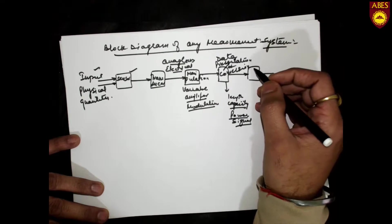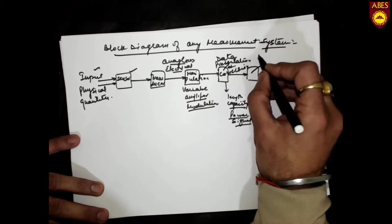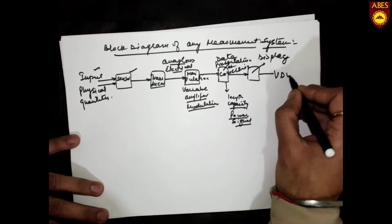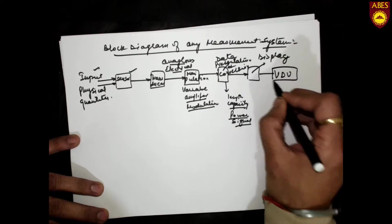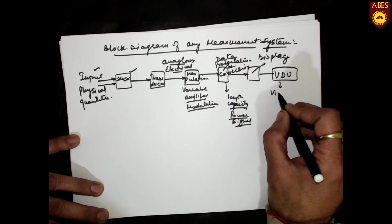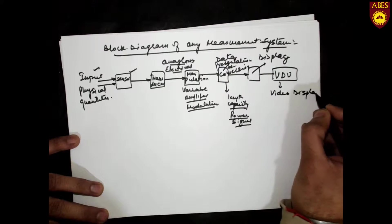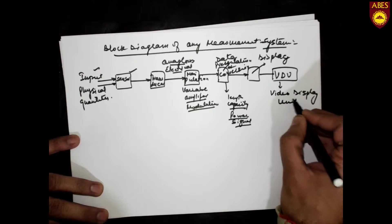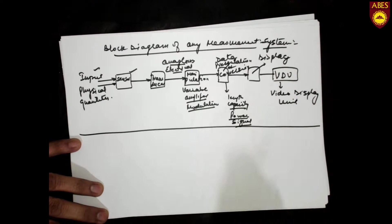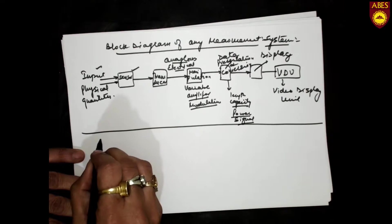After manipulation, we transmit to the display unit. The display unit can be a VDU — which stands for Video Display Unit. So this as a whole is the block diagram of a measurement system.